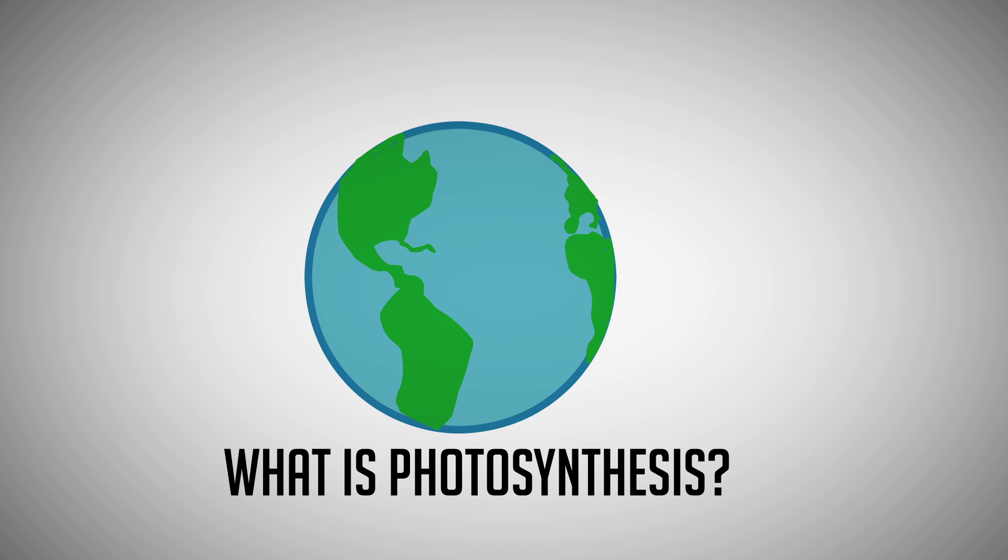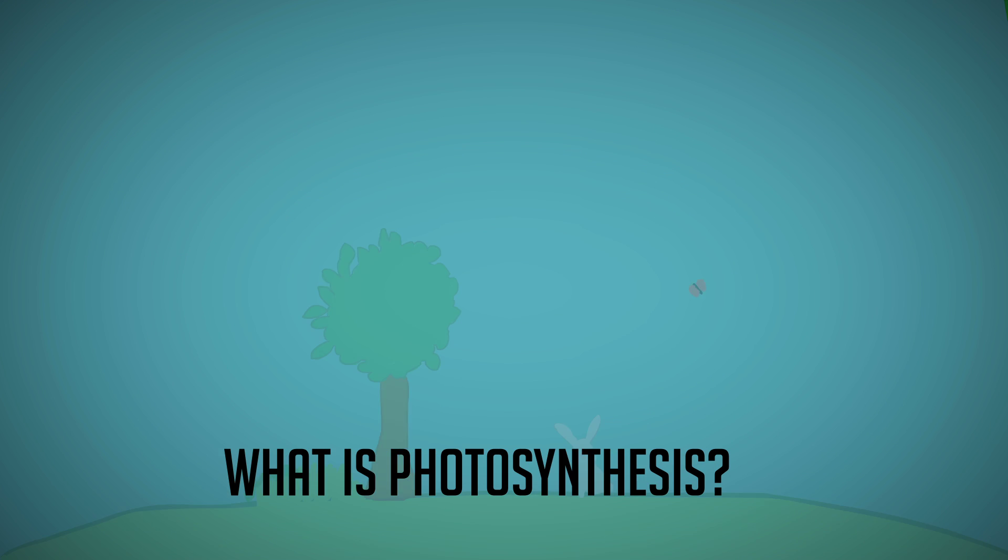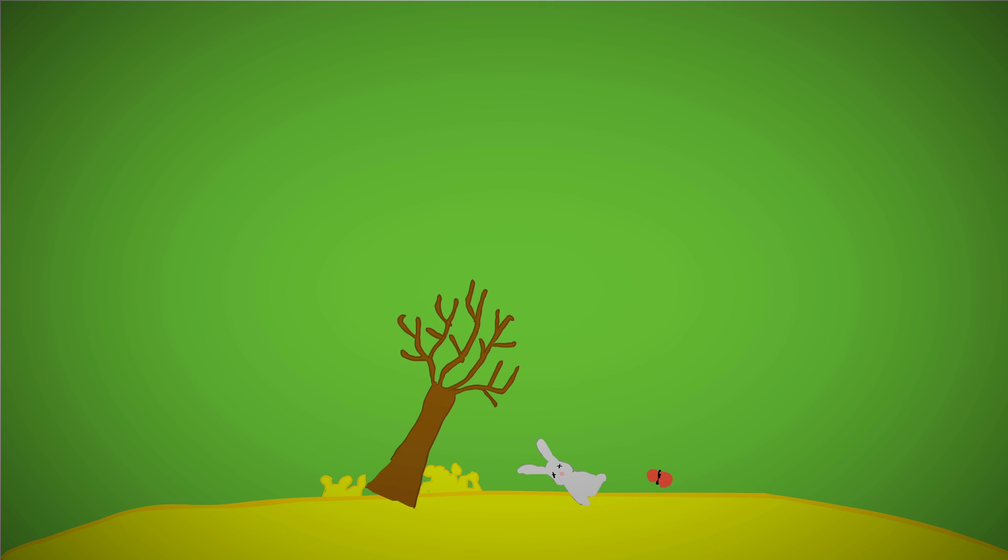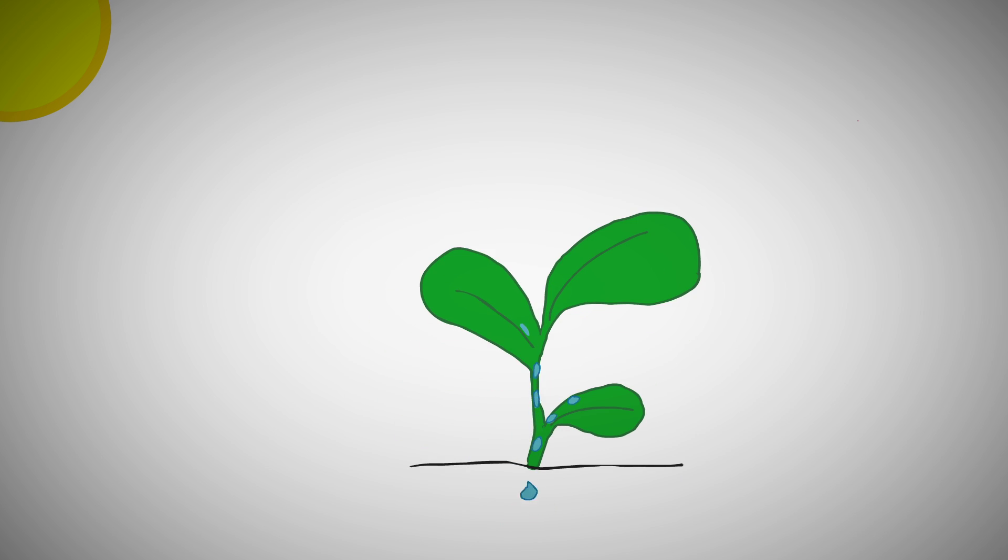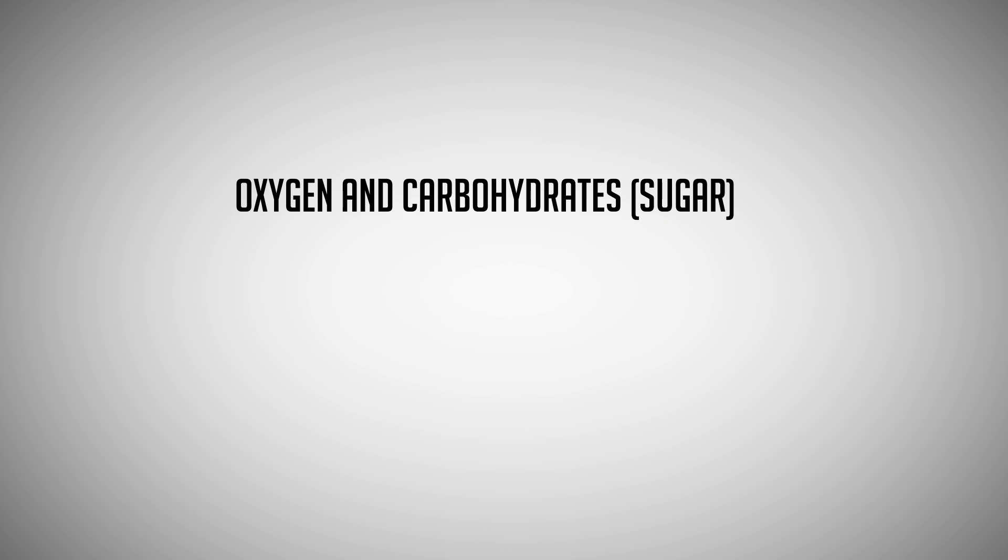What is photosynthesis? Without photosynthesis, there would probably be no life on Earth. Photosynthesis is the process in which green plants use water, carbon dioxide, and sunlight to produce oxygen and carbohydrates, or sugar.